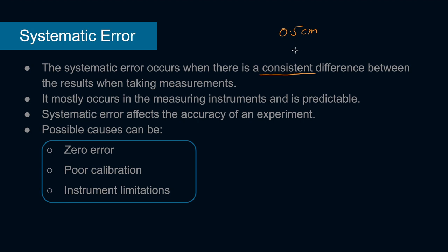In random error we know results are unpredictable because of the random nature. But with systematic error, because of this consistent sequence, we can completely solve that problem. As the name suggests, systematic error mostly occurs in measuring instruments. Random error can happen throughout the whole experiment, but systematic error is mostly limited to the instrument you are measuring with. And as I said, it is predictable. Systematic error affects the accuracy of an experiment.